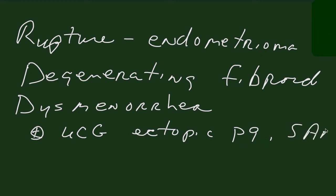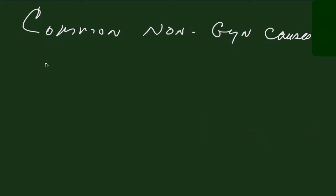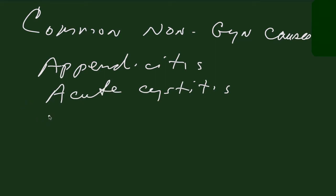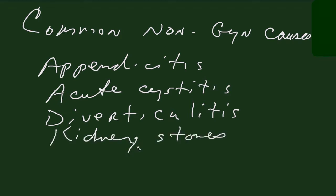Common non-gynecologic causes of acute pelvic pain in women include appendicitis, acute cystitis, diverticulitis, kidney stones, and abdominal wall trauma. There are many other possible causes, but these are the most common reasons for acute pelvic pain in women.